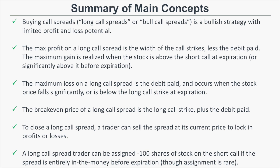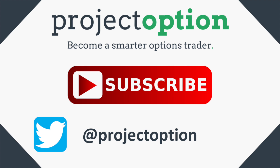The break-even price is the long call strike price plus the debit paid. To close a long call spread before expiration, a trader can sell the spread at its current price to lock in profits or losses — you do not need to hold until expiration. Lastly, since a long call spread includes a short option, you can be assigned early on that short call if it's deep in the money before expiration. If the stock price is significantly above the short call strike and that short call has very little extrinsic value — or a dividend is approaching — there is potential for early assignment, which would result in being short 100 shares of stock at the short call strike price.